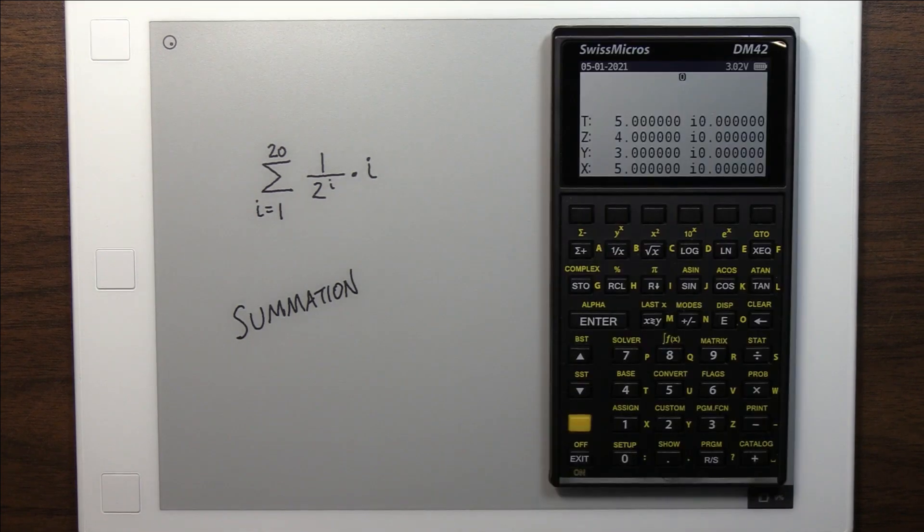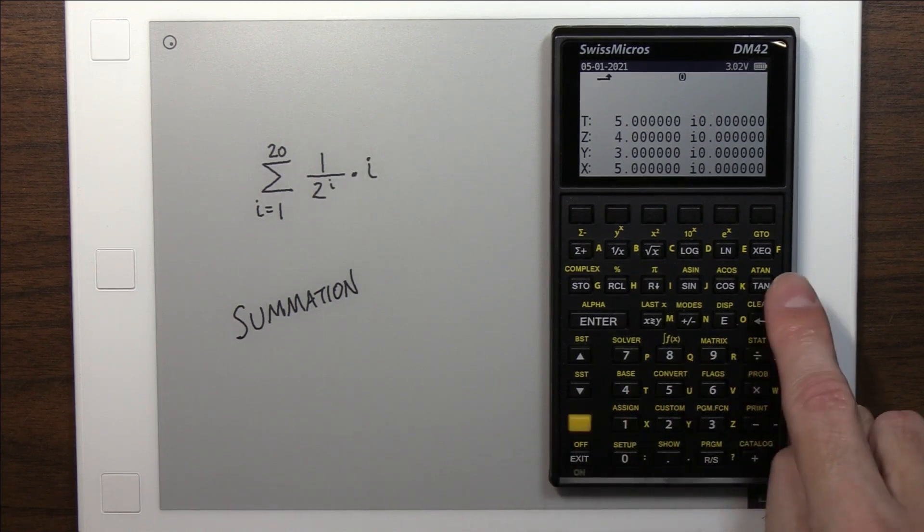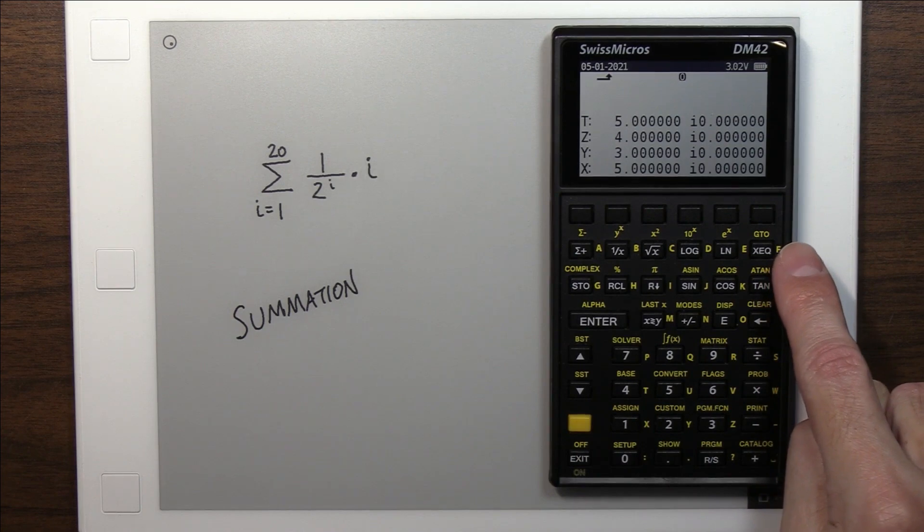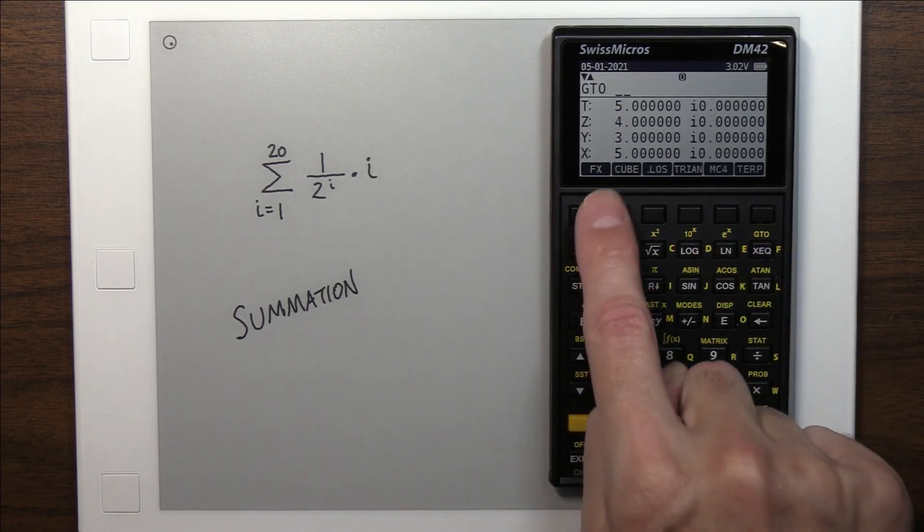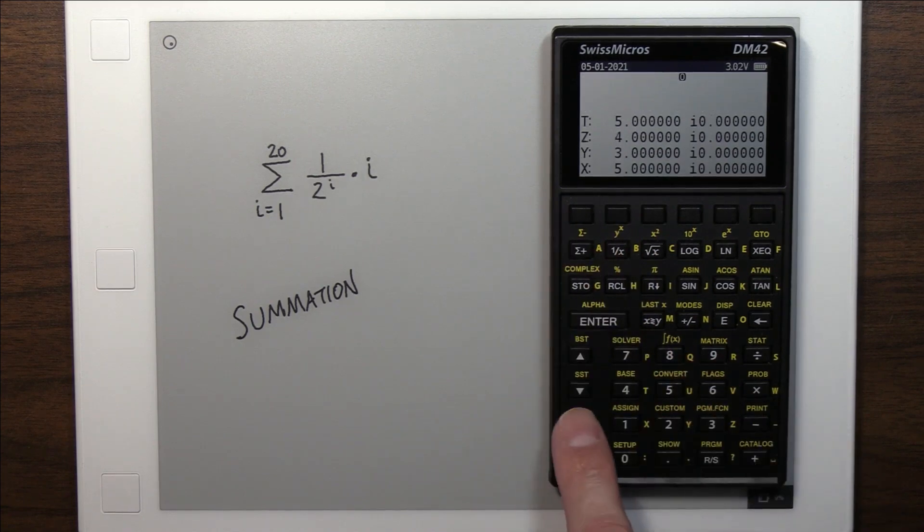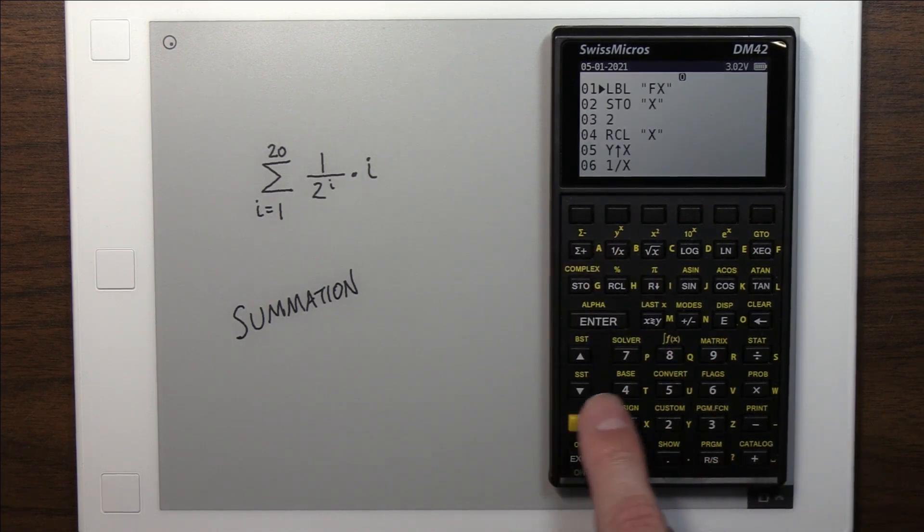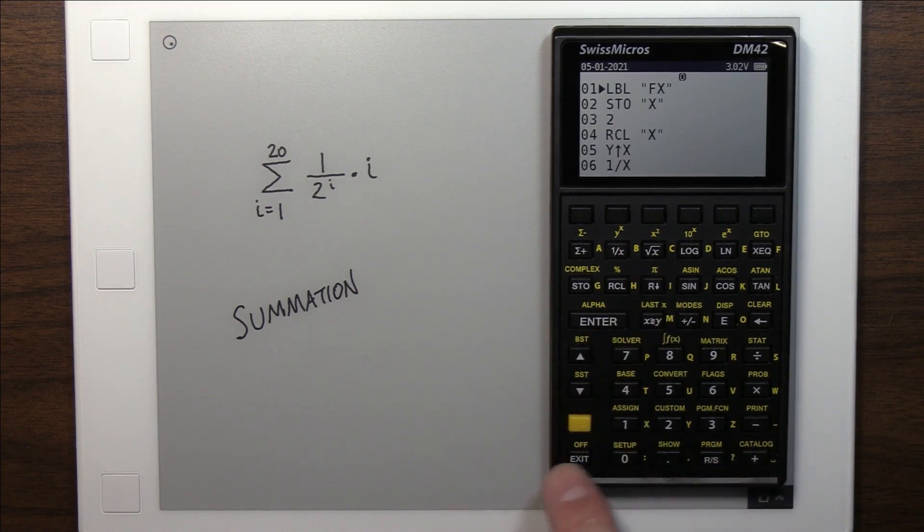Last one here, a summation. I couldn't find summation in this little guy here, so I just made a quick little program. And what it does, it takes the contents, this is the part that's a little obtuse. You have to go into, I've got it called f of x. You go into this, and you have to have your program in there. In other words, you have to have your equation in there. I won't bore you with that, but I've entered this in there.